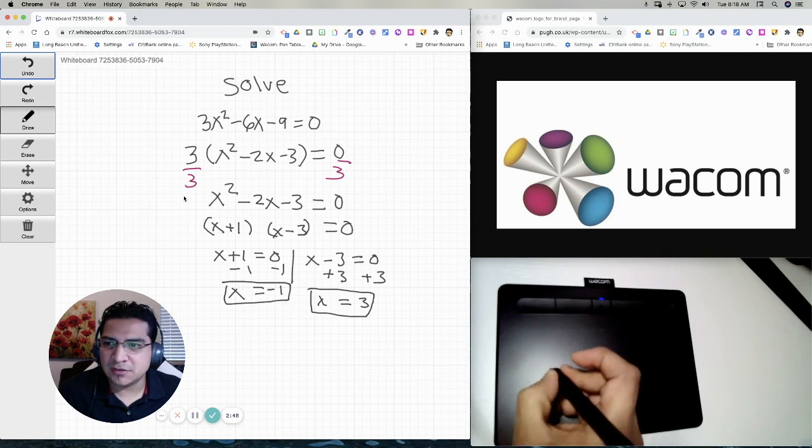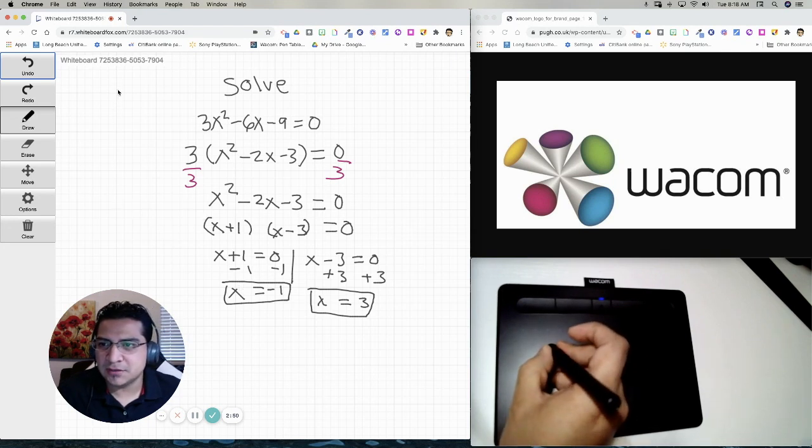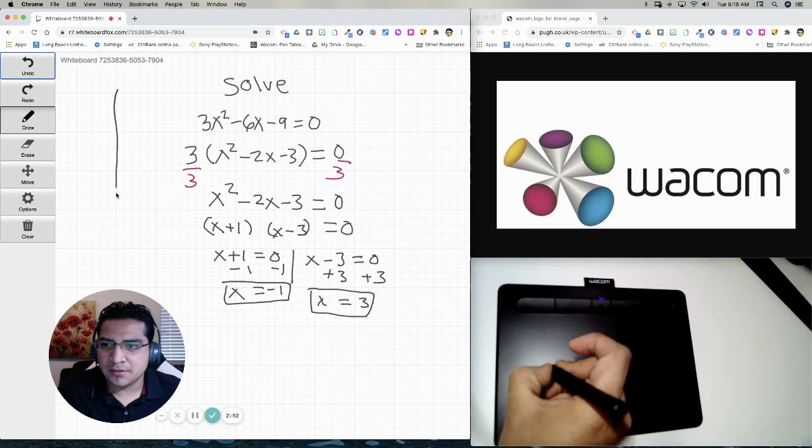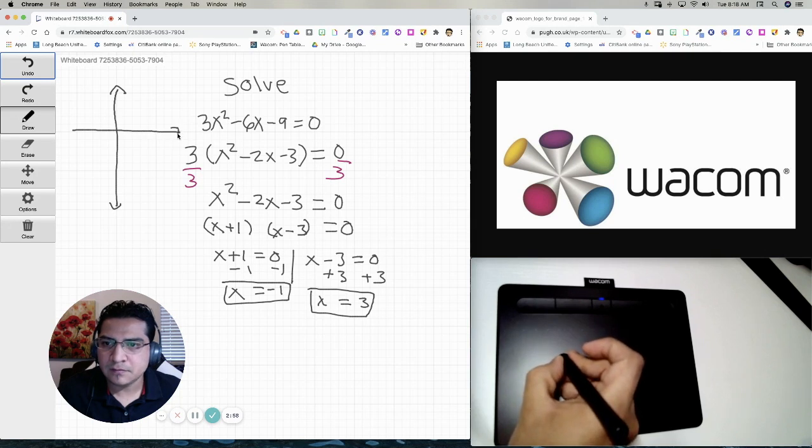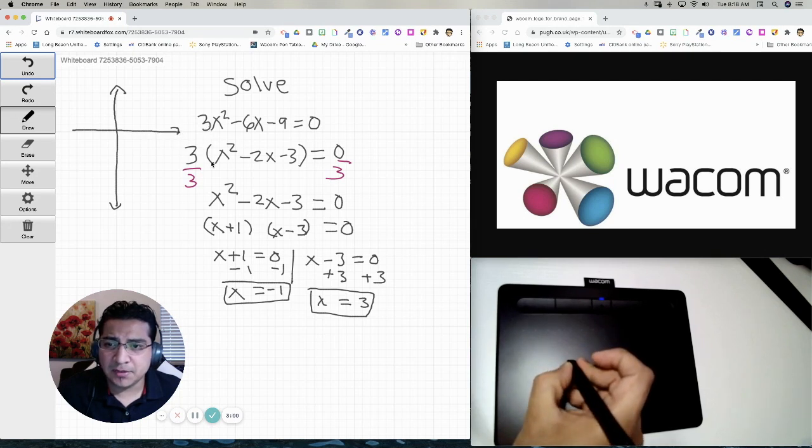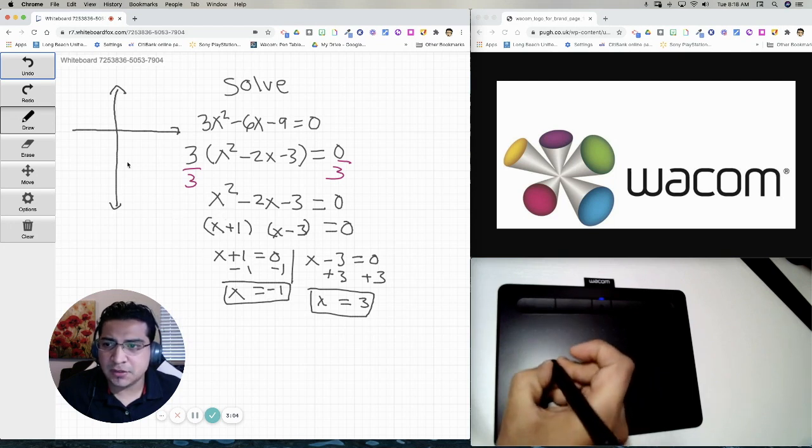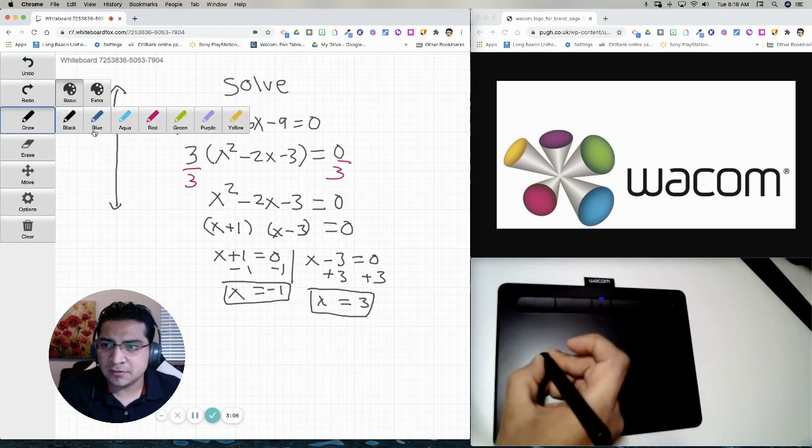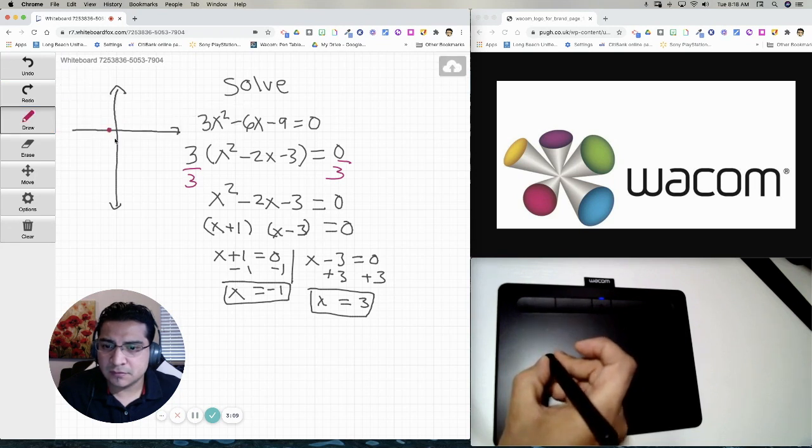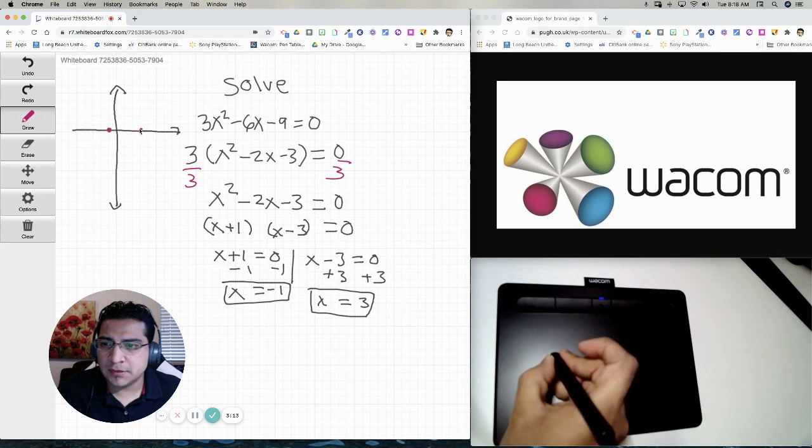If I want to do a quick sketch of this, I can actually do it over here. This shouldn't be that bad. This parabola opens up, right? And it looks like the zeros are negative 1 and 3. So 1 right here. Just put 1 right here. And the other one is 3. So 1, 2, 3 right there.